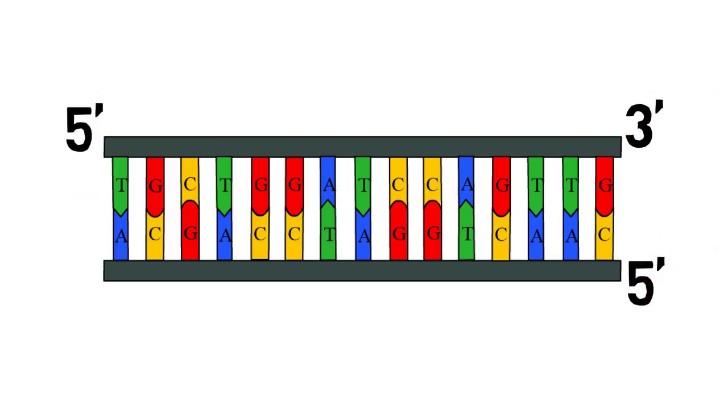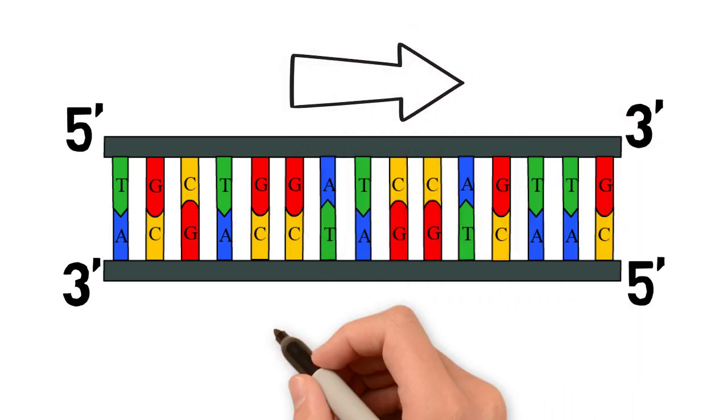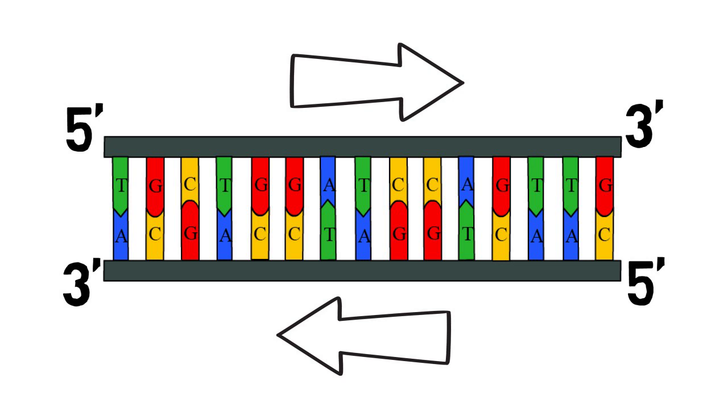It turns out that the two complementary strands of DNA are in the opposite orientation relative to each other, which also means that the genes that are found on one strand are going to be in the opposite direction than the genes that are on the other strand.